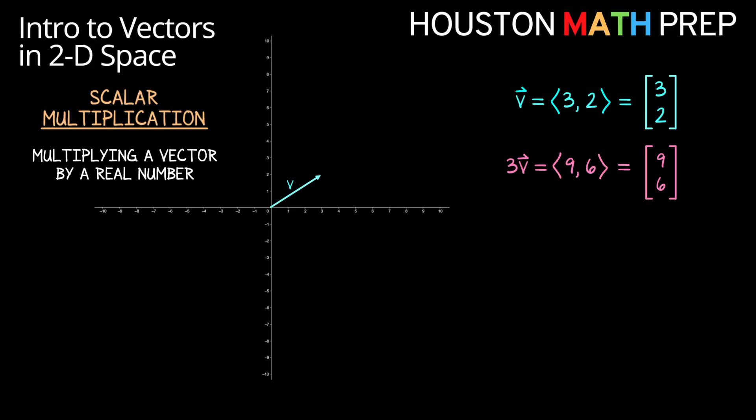If we want to look at what that does physically and visually to our vector V, so here we've got vector V represented in 2D space, and if we sketch 3 times vector V at the same time, the vector (9,6), you can see that it points in the same direction as vector V, and you might also notice that it's exactly 3 times as long, or we could say its magnitude has been multiplied by 3 as well. So that gives us an idea of what happens with scalar multiplication and positive numbers.